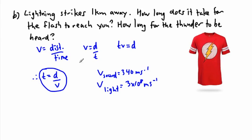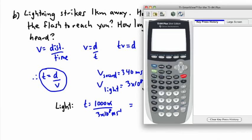Let's look at these two different situations. If I look for light, how long will it take for the light to reach you? Well, if the distance is 1 kilometer, that's 1,000 meters. So the time is going to be 1,000 meters divided by the speed of light, which in this case is 3 times 10 to the 8 meters per second.